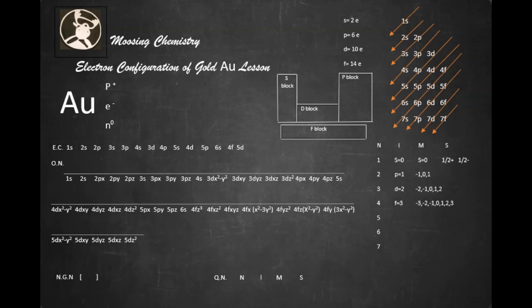Hi, welcome back to Moosing Chemistry. This is an electronic configuration of gold Au lesson. Gold happens to be element number 79, so our atomic number is 79, and our atomic mass number is 197.